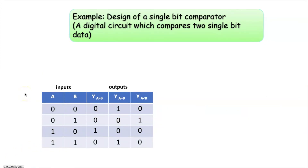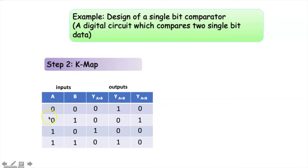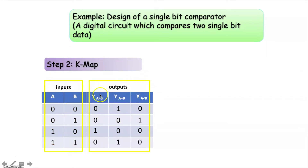The next step is to convert this truth table into a K-map. Here we can see these are the two inputs and these are the outputs. We will represent each column of the outputs in terms of the inputs in a K-map.